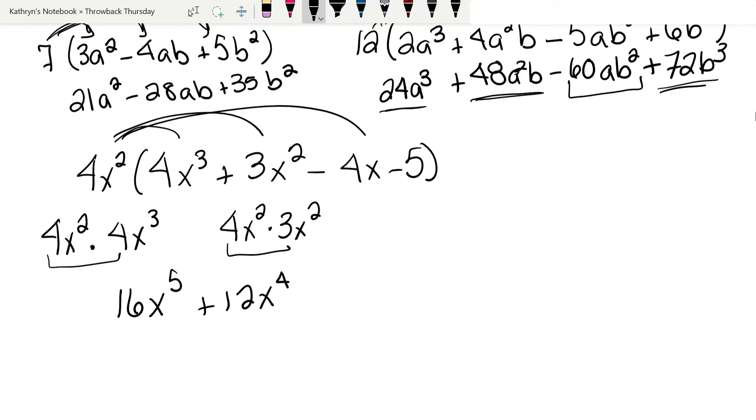Now I'm going to do 4x² times negative 4x. So 4 times negative 4 is negative 16. x² times x is x³. And finally, we're going to take 4x² times negative 5. So 4 times negative 5 is negative 20x².